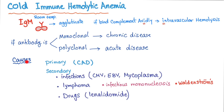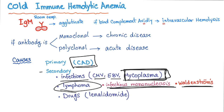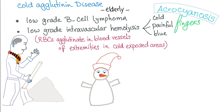Causes can be primary or idiopathic — this is cold agglutinin disease — or secondary to infections such as CMV, EBV, or Mycoplasma, which is a big deal including infectious mononucleosis. It can also be secondary to Waldenström's macroglobulinemia, associated with lymphoma, and drugs such as lenalidomide.